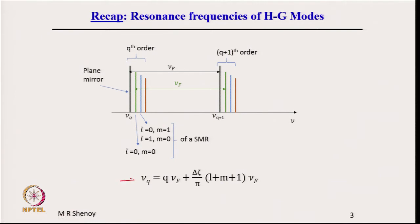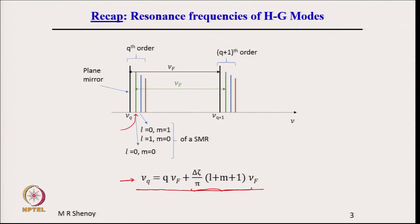The resonance frequency can be written as: nu_q = q * nu_f + (delta_zeta / pi) * nu_f + (m+1) * nu_f, where l and m are mode numbers and nu_f is the free spectral range. If l and m are 0, the resonance frequency for the spherical mirror resonator reduces to the plane mirror resonator frequency nu_q = q * nu_f plus the curvature-dependent correction term, which causes a slight shift in resonance frequency.